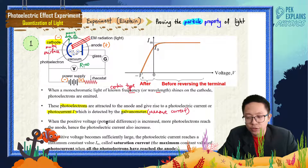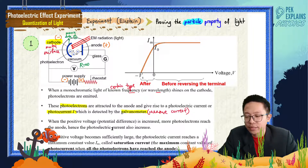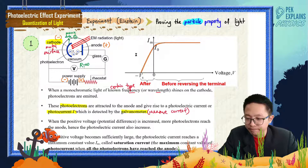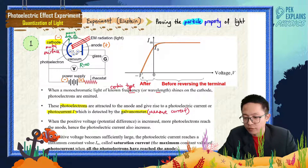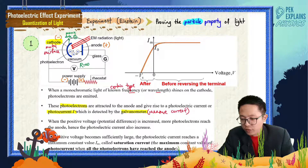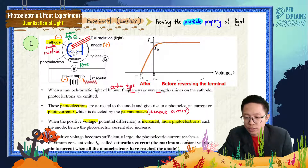When the positive voltage or potential difference is increased, more photoelectrons will reach the anode, and hence the photoelectric current will also increase.